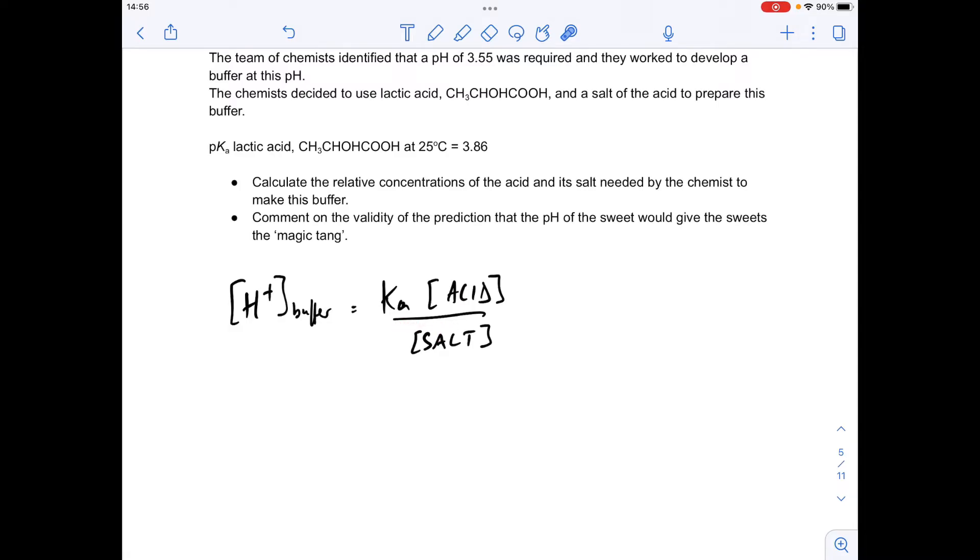So once you've waded through all the information about the sweet, its magic tang and all that sort of stuff, basically all we want to find is the acid to salt concentration ratio. So we'll make that the subject of this equation. How do we do that? We take the Ka over to the other side and it goes underneath the H plus concentration.